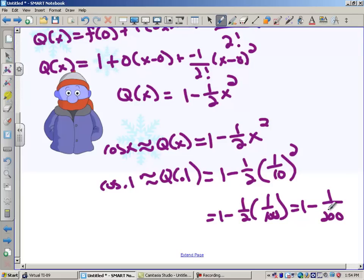Now if you know that 1 half is 0.5, 1 over 200 is 0.005. So this is 1 minus 0.005, which is 0.995. So we're going to say that the cosine of 0.1 is approximately equal to 0.995.